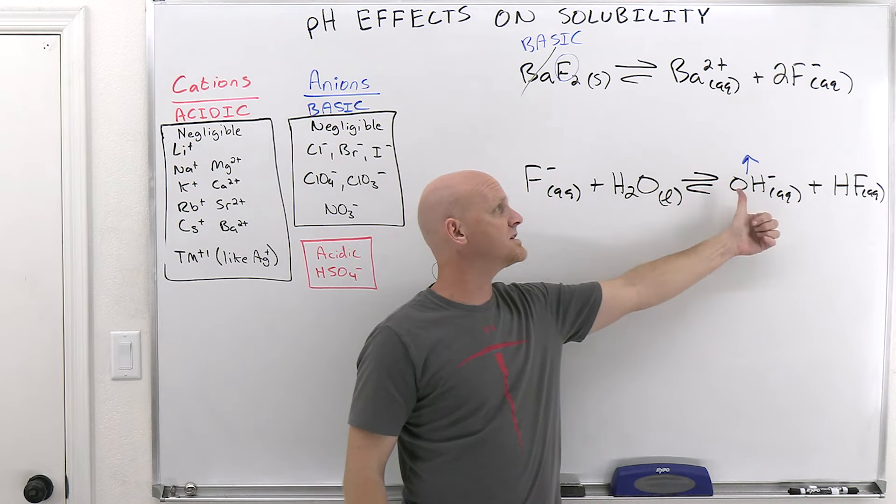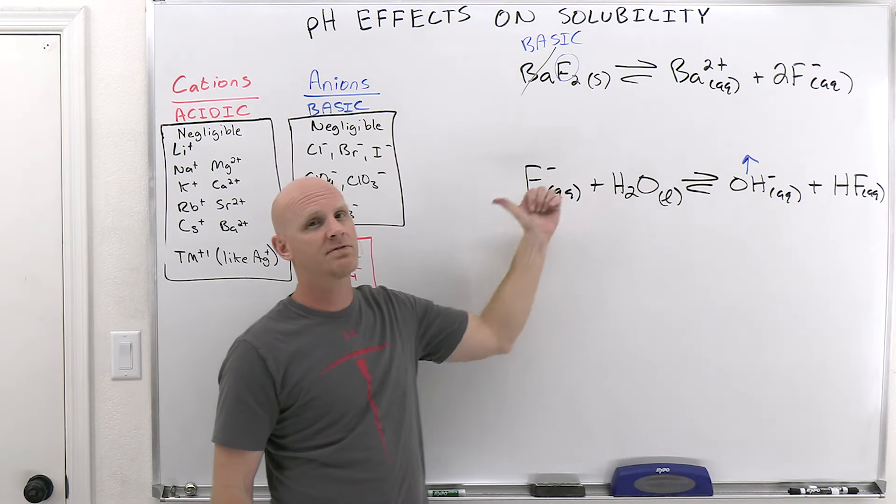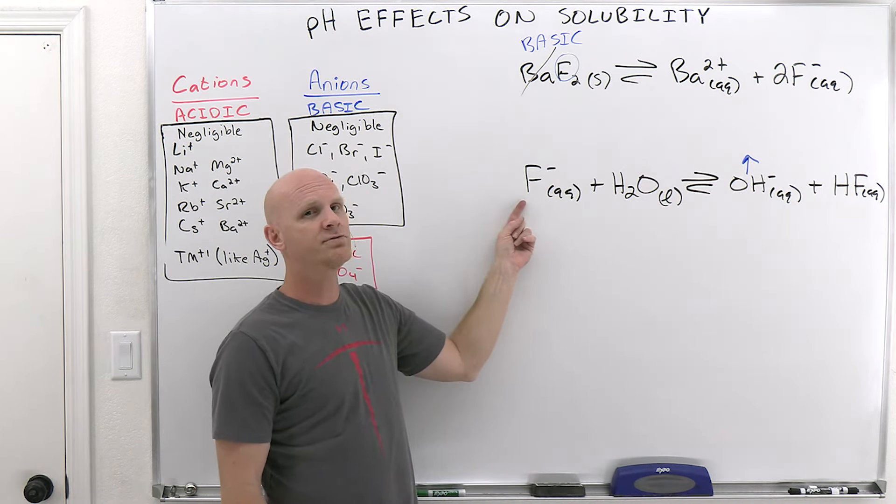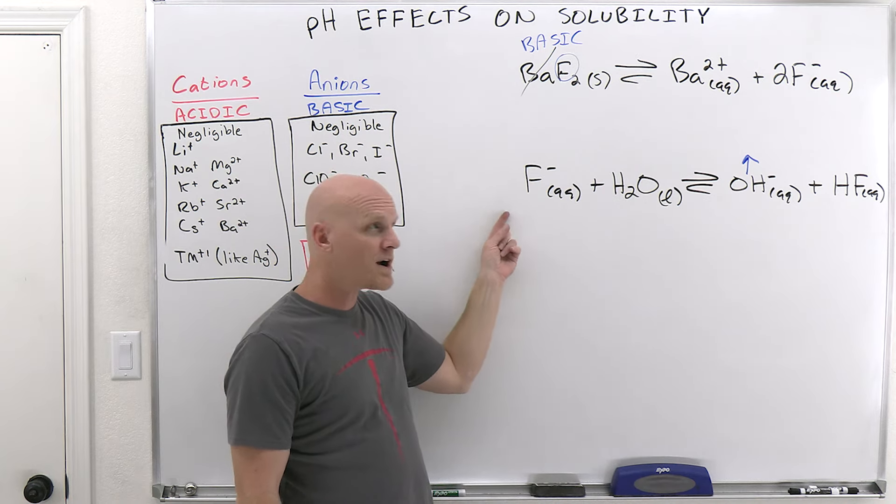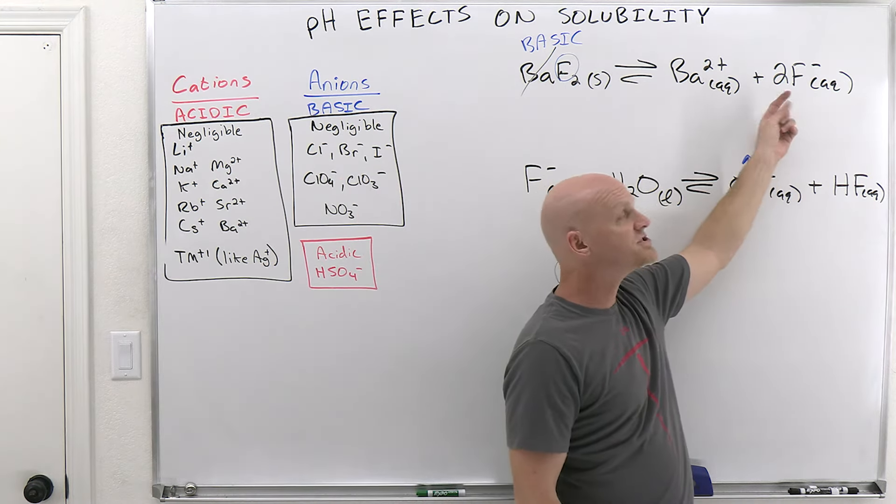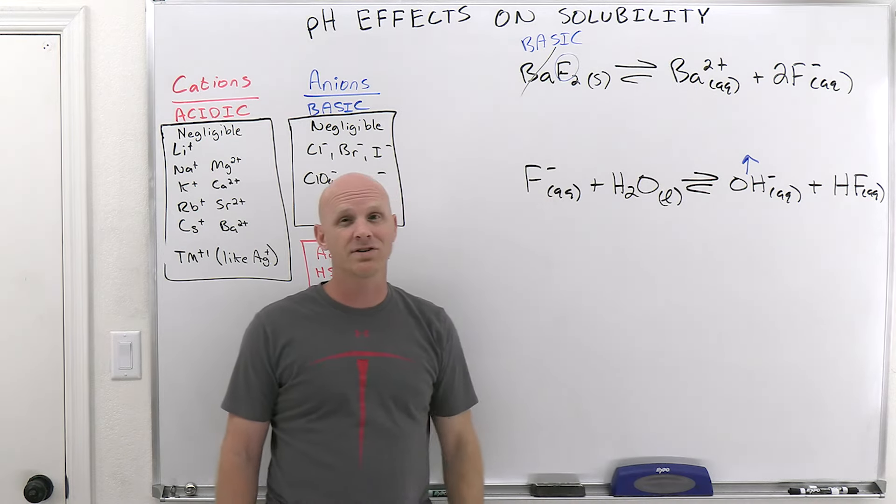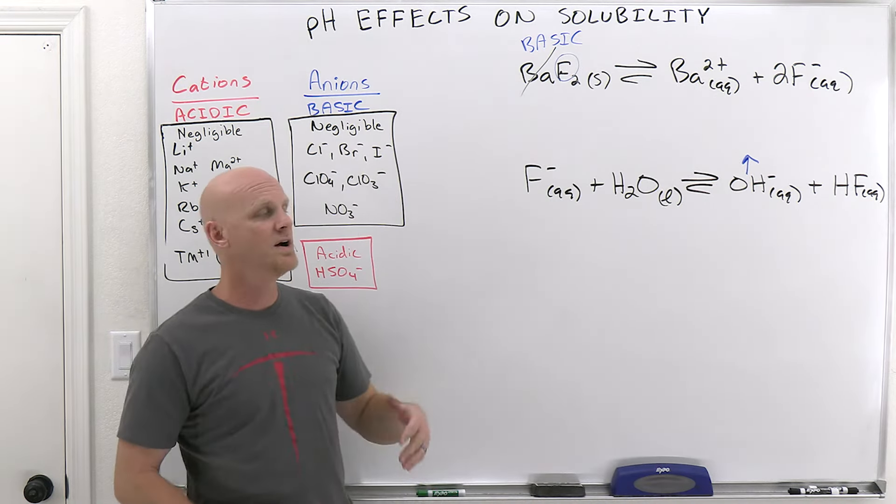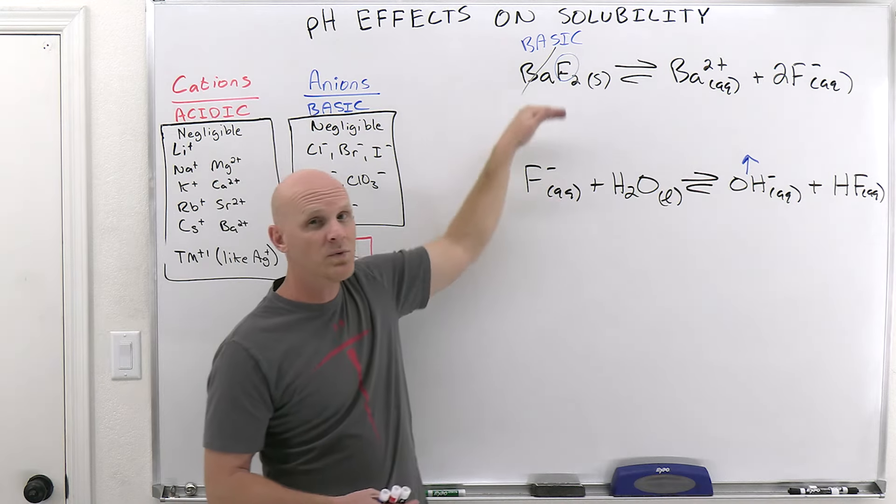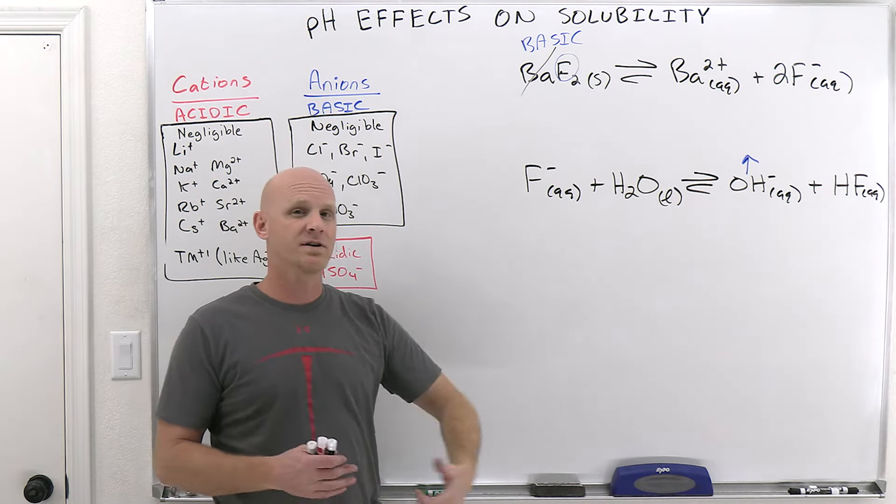And having more hydroxide, that's going to shift this equilibrium back to the left, producing more fluoride. Well, if you have more fluoride, having more fluoride shifts this equilibrium back to the left, meaning you have less dissolved solid and a lower solubility. So hard to explain it without looking at both equilibria and the impact of one on the other, but that's the deal.